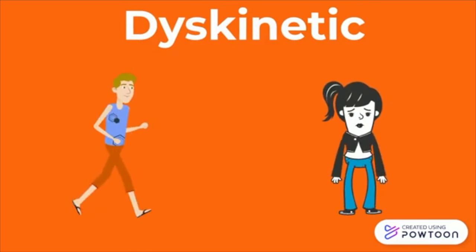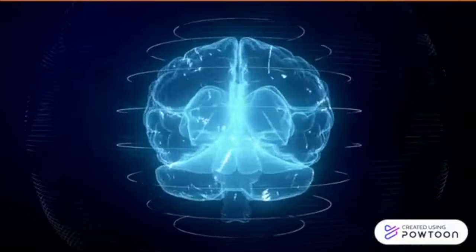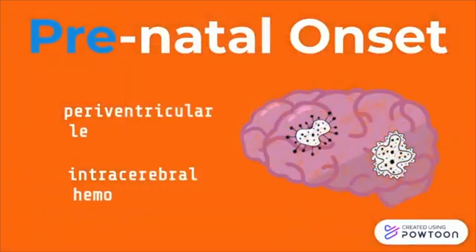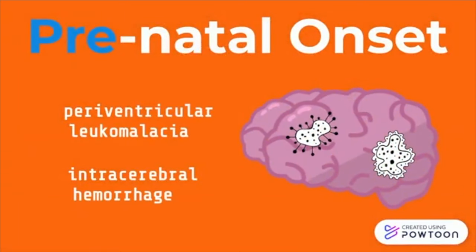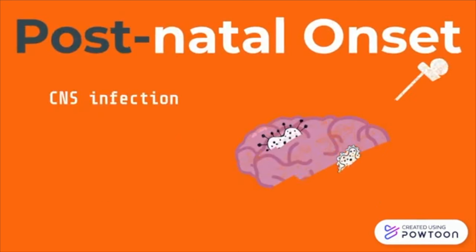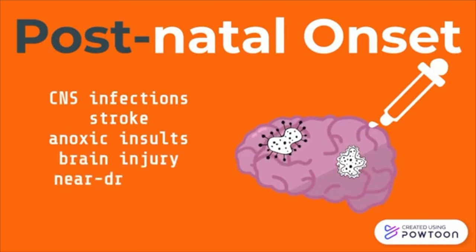CP occurs due to an injury to the developing brain in the prenatal through neonatal period, essentially when the baby is growing inside of the mother. Prenatal and perinatal causes include congenital brain malformations, where intracerebral hemorrhage and paraventricular leukomalacia are the main pathologic findings. Post-neonatal onset CP can also occur and is usually due to traumatic central nervous system infections, stroke, anoxic insults, brain injury, near-drowning, and meningitis.